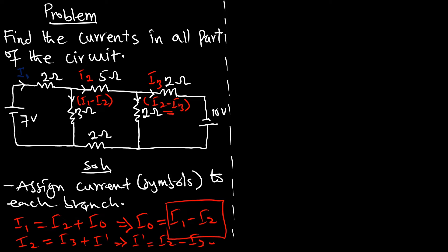After assigning the current symbols, we also identify the possible nodes. I'll call them a, b, c, d, e, f, g, and h to help identify the loops. Now we have everything in place — current directions, symbols, and nodes. Let's apply KVL. We have three loops: loop one, loop two, and loop three.